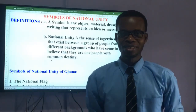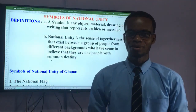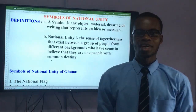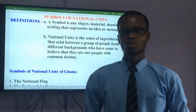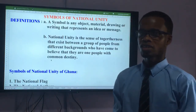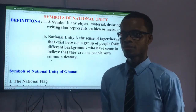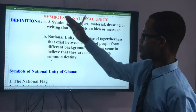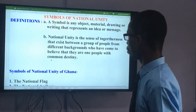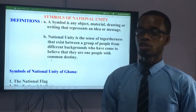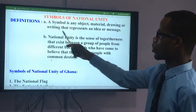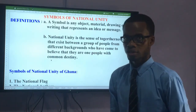Dear students, we'll begin with our national symbols and look at some definitions. In social studies there are a lot of definitions you have to give to score points. As good social studies students, let's look at some of these. We have symbols of national unity — we break this into two parts: we define 'symbol' and then 'national unity.' A symbol is any object, material, drawing or writing which is used to represent any idea or message.